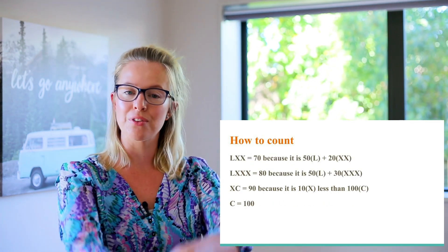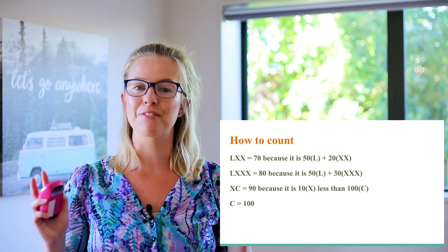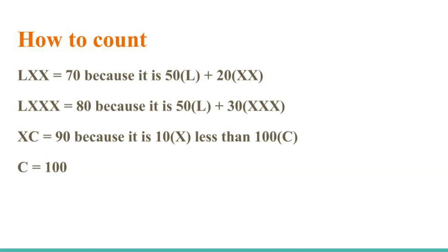Hopefully you are able to keep up! Now we're getting into the bigger numbers. We have the Roman numerals LXX — using the knowledge we already have, we can tell that is seventy. L which equals fifty, plus two lots of ten, equals seventy. And the same for eighty: L equals fifty, and then three lots of ten in the X's, which makes it eighty.